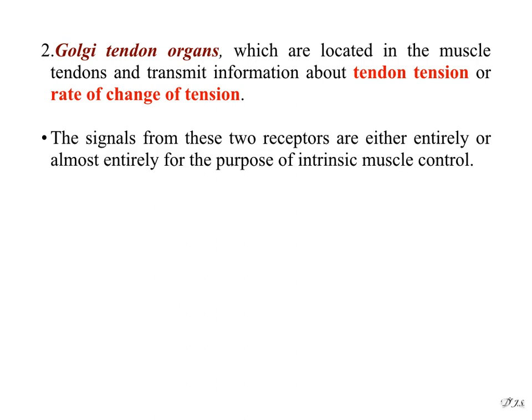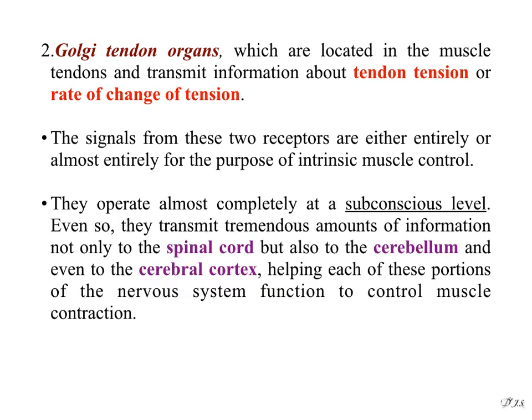The signals from these two receptors are either entirely or almost entirely for the purpose of intrinsic muscle control. They operate almost completely at a subconscious level. Even so, they transmit tremendous amounts of information not only to the spinal cord but also to the cerebellum and even to the cerebral cortex, helping each of these portions of the nervous system function to control muscle contraction.